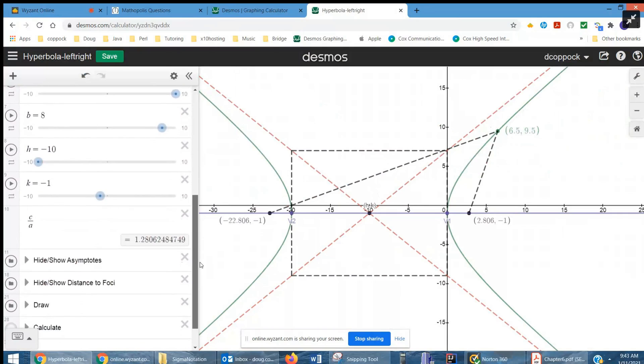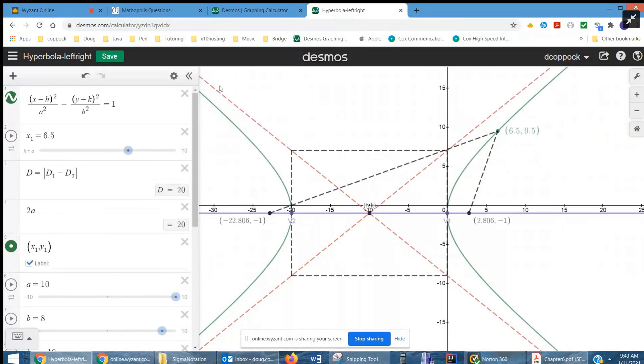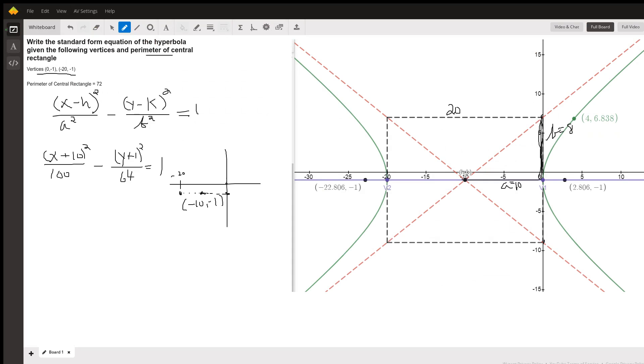The c over a is the eccentricity. And there you go, hope that helped. If you have any questions, post them on.